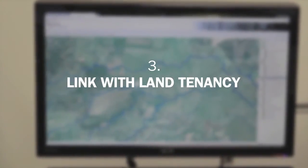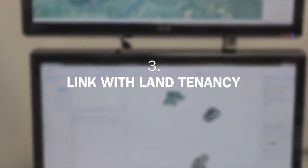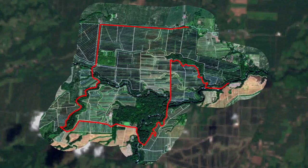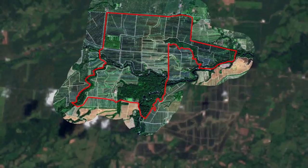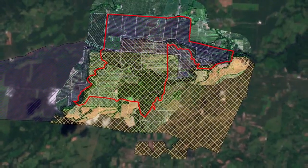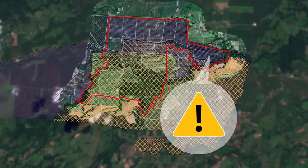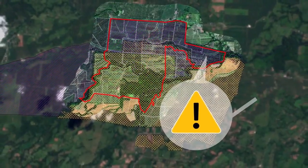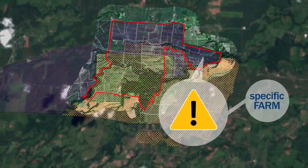The third principle is the link with land tenancy. The system only processes images of productive landscapes for which there is a layer of information recording land tenancy. This facilitates the establishment of payment for ecosystem services schemes within productive landscapes, by relating the layers of land use change with the layers of tenancy of specific farms.